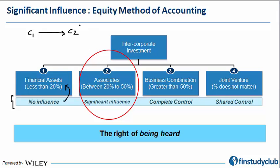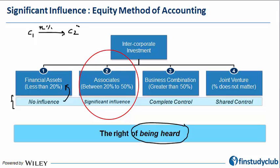Now we are going to talk about significant influence — the right of being heard. By making an X percent investment, X is not necessarily fixed; generally it is 20 to 50 percent both inclusive, but it could be 90 percent or five percent also. The key question is: by making this X percent investment, is C1 able to influence the management of C2?